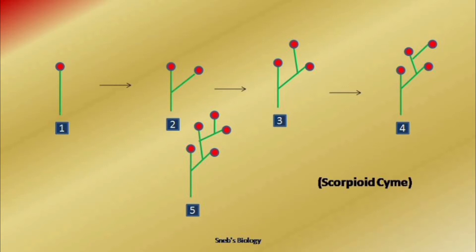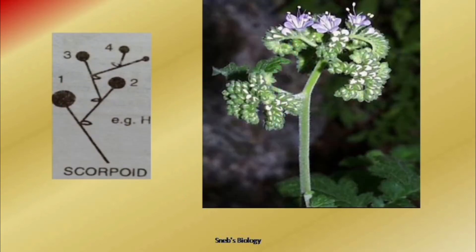The second type is scorpioid. In scorpioid, the term is given on the basis of snake-like movements — the branches are produced in a zigzag manner. Look at the diagram: the main axis terminates into a flower, then the branch is on the right, next on the left, then right, then left. So if we draw it, it goes zigzag. The name is based on the side of branching, but every time only one branch is produced. Scorpioid inflorescence is found in Ranunculus.